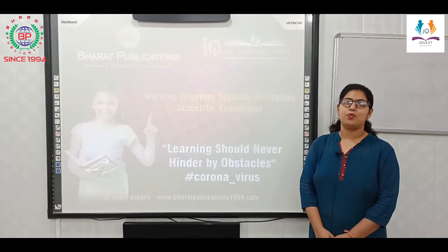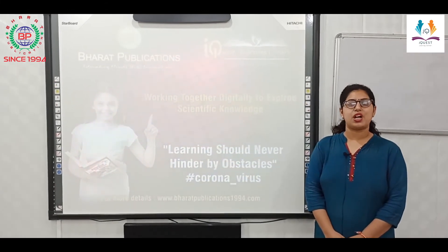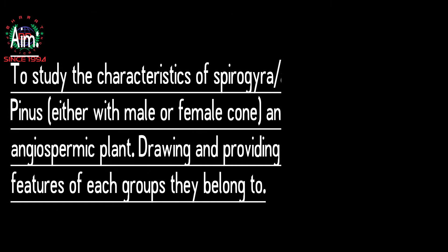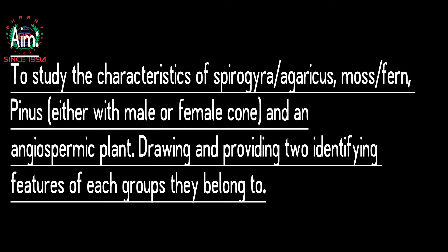Hello students, today we are going to start a new activity related to the subject biology. Its aim is the study of the characteristics of Spirogyra, Agaricus, moss, fern, Pinus, and an angiospermic plant — drawing and providing two identifying features of each group they belong to. Let's discuss some theory related to this activity.